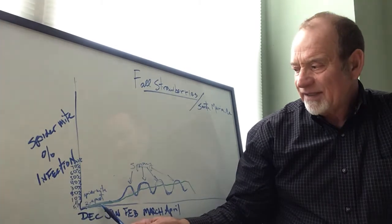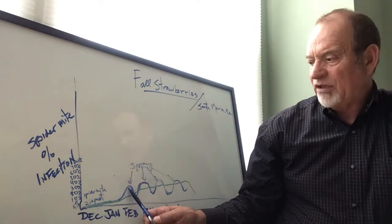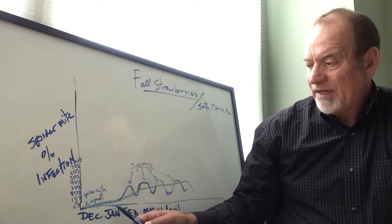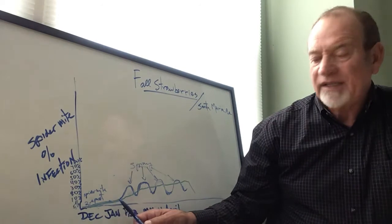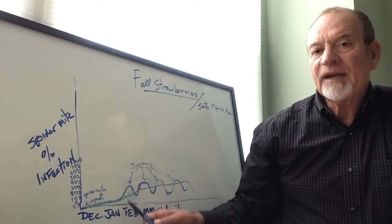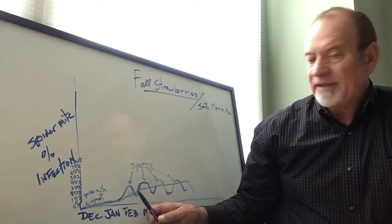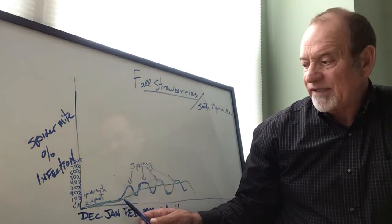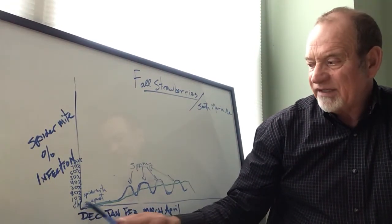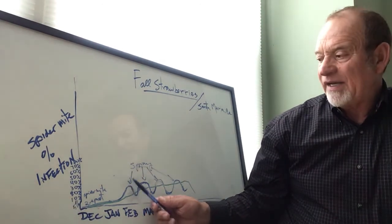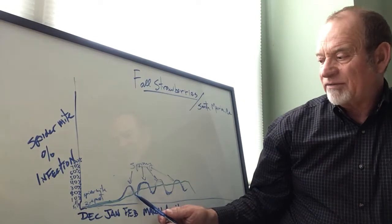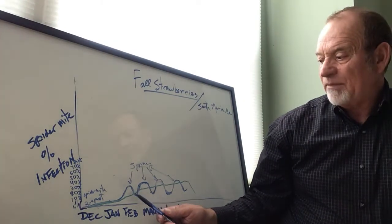The blue represents the spider mites and the green represents the beneficials. Normally the spider mites will start multiplying faster than the persimilis or californicus. As you can see, the percent infection of two-spot can get really high, then we do a spray and the population goes down.